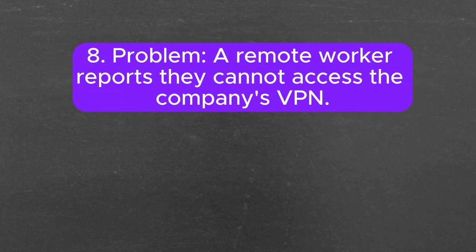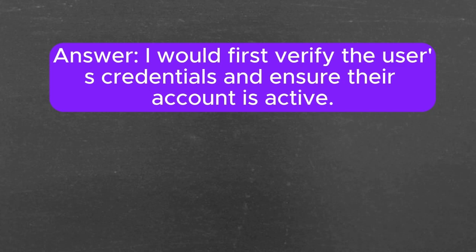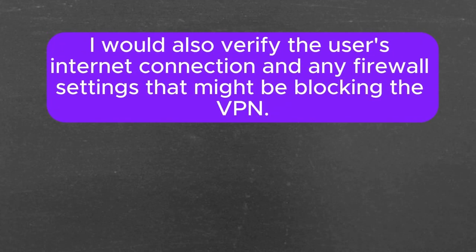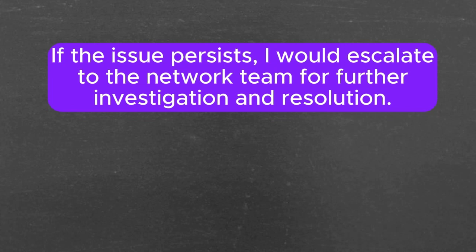Problem 8: A remote worker reports they cannot access the company's VPN. How do you troubleshoot this? I would first verify the user's credentials and ensure their account is active. Next, I would check if there are any issues with the VPN server or network. I would also verify the user's internet connection and any firewall settings that might be blocking the VPN. If the issue persists, I would escalate to the network team for further investigation and resolution.